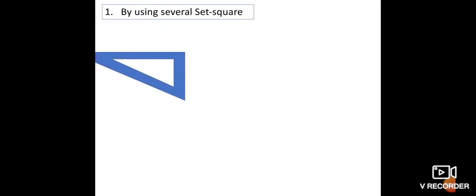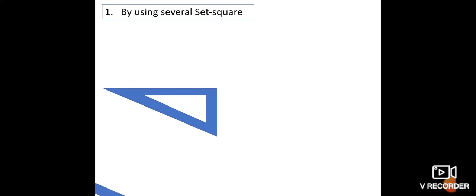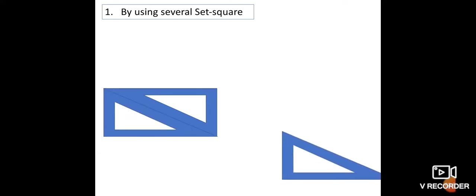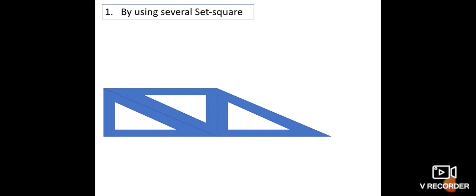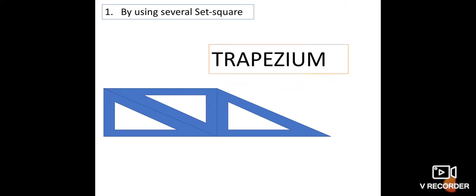And one more figure using several set squares gives us this shape. Its name is trapezium. We can see all five figures have only four sides, so these are all quadrilaterals: square, rectangle, parallelogram, trapezium, and rhombus all have four sides. Therefore, these are quadrilaterals.